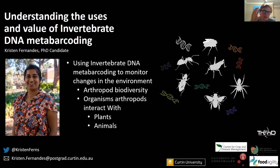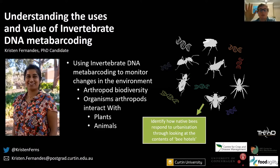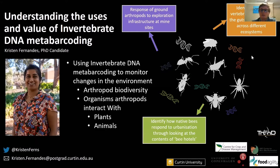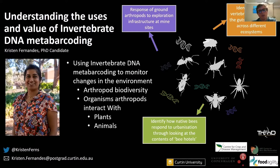Kristin has three main projects: identifying how native bees respond to urbanization through bee hotel contents; the response of ground arthropods to exploration infrastructure at mine sites; and eDNA from vertebrate fauna in the guts of carrion flies across different ecosystems. That last project sets up transects away from Perth Zoo with fly traps, capturing flies at varying distances to look at gut contents for exotic fauna — how far away do you get lion DNA reads?